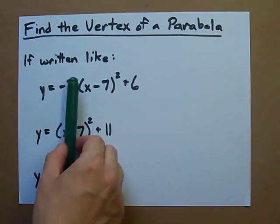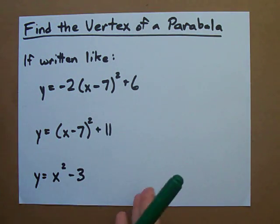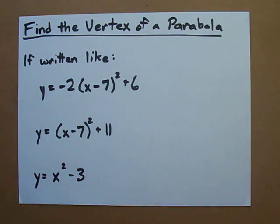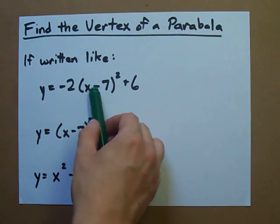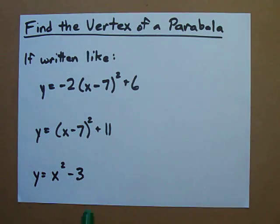If the function is written like any of these, you probably recognize this, or you'll have to learn to recognize this, as what we call vertex form. You have a number out in front, maybe. You have x, maybe plus or minus some number, all squared. And then you have something maybe at the end.